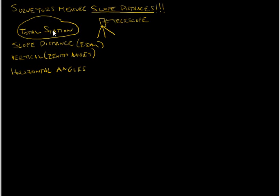The total station converts it for you via trigonometry. The total station is an instrument that surveyors use to measure slope distances, vertical angles — which are also called zenith angles — and horizontal angles. These slope distances are measured using electromagnetic distance measurements, and the acronym is EDM.